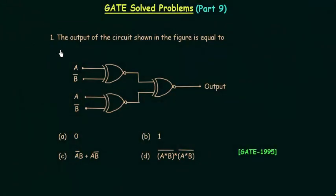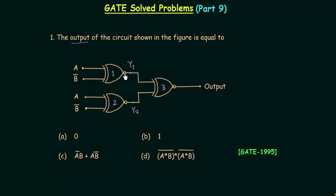In the first problem we have to calculate the output of the given circuit. In this circuit we have 3 XNOR gates. Let's say the output of the first XNOR gate is y1 and the output of the second XNOR gate is y2. First I will find the output of the first XNOR gate, then we will find the output of the second XNOR gate.